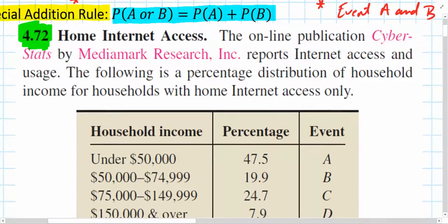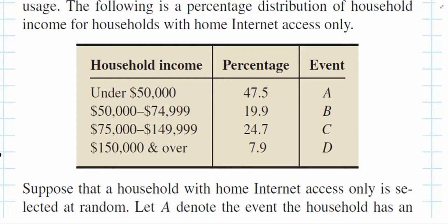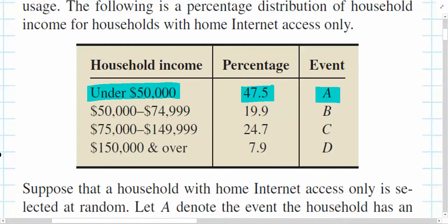So let's see what the question asks us to find. The online publication, CyberStats by MediaMark Research Incorporated, reports Internet access and usage. The following is a percentage distribution of household income for households with home Internet access only. So this isn't a frequency table, it's more like a relative frequency table. And it looks like we've labeled four different events that may occur. Event A is the percentage of families that earn under $50,000 as the household and have home Internet access. So again, those that have home Internet access, 47.5% of those with home Internet access only have a household income, combined income, of under $50,000.